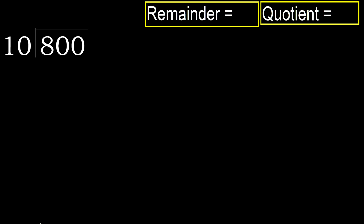800 divided by 10. 8 is less, therefore next. 80 is not less, therefore work with 80. Multiply by which number is nearest to 80, but not greater.